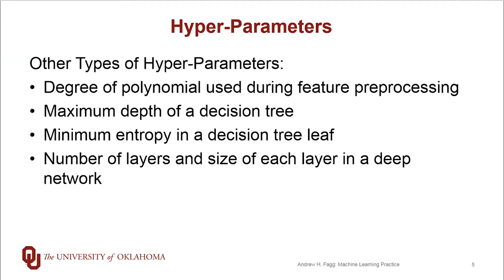For example, if we're doing linear regression with polynomial pre-processing of the input features, then the degree of that polynomial is a hyperparameter. In the case of decision trees — which we'll talk about in much more detail in the next couple of weeks — there are a whole range of different possibilities for hyperparameters. One is restricting the maximum depth of a decision tree. Another restricts the entropy in the leaves, such that we won't continue to expand a leaf if it already has very low entropy.